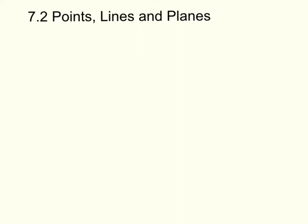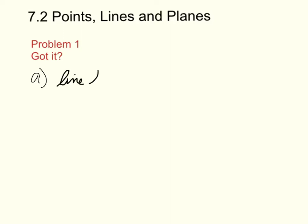Let's look at problem one — naming points, lines, and planes. Part A asks: what are two other ways to name line RS? If you look at line RS, you can name it, for example, line L, because it's a lowercase cursive letter.